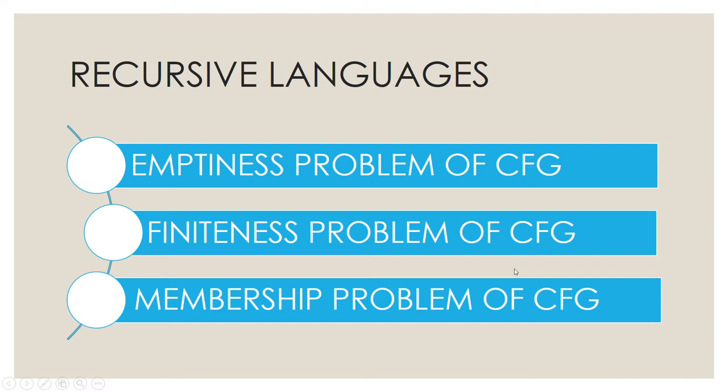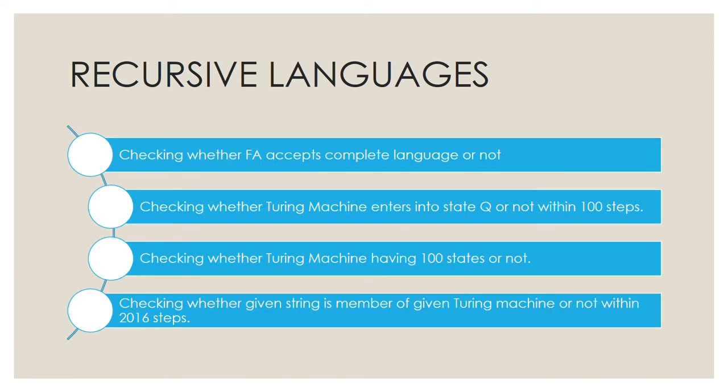The next examples of recursive languages are the emptiness problem of CFG, the finiteness problem of CFG, and the membership problem of CFG. Note that the equivalence problem of CFG is not a recursive language.